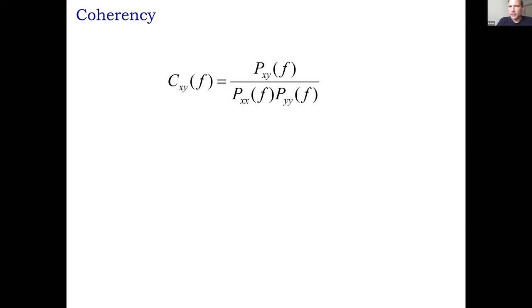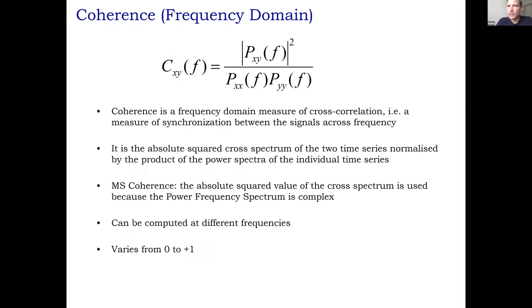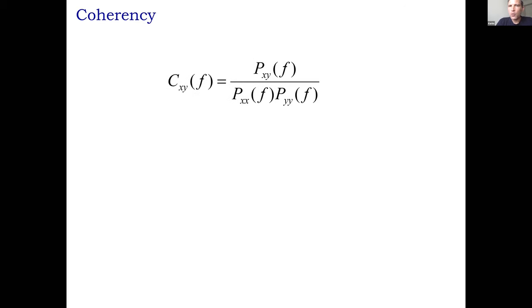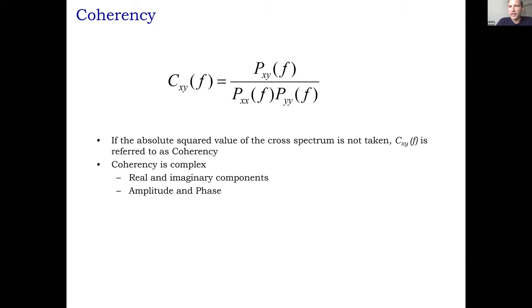A related metric is coherency C, which is the complex version of coherence — it has both real and imaginary components, or equivalently, amplitude and phase. Both coherence and coherency are functions of frequency. The key difference is that coherence uses the magnitude squared in the numerator, whereas coherency C is a complex metric. I'll return to why this is useful when discussing imaginary coherence.